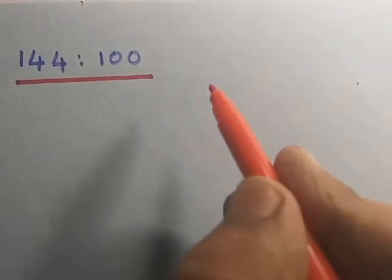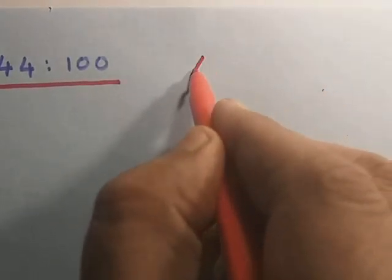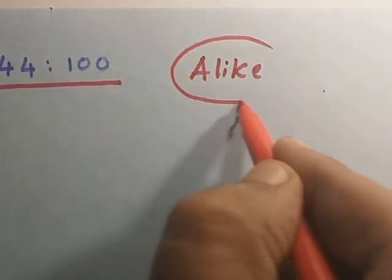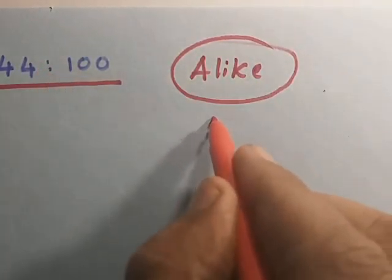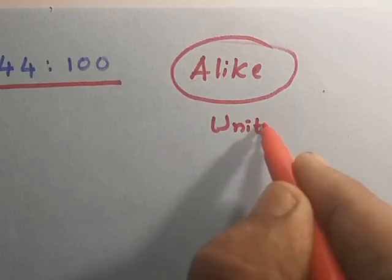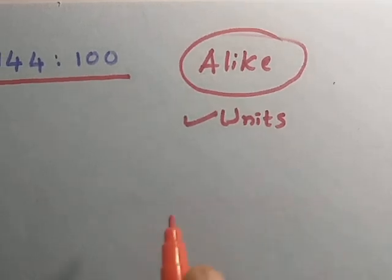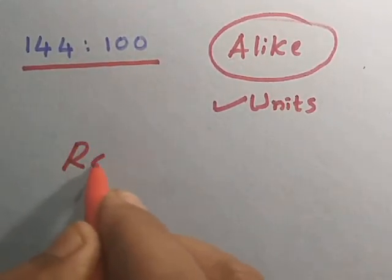Comparison is possible only when they are alike. That is, their units are same. If units are same, then comparison is possible and such comparison is called as ratio.